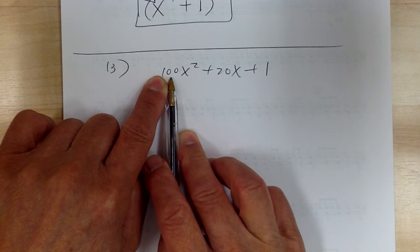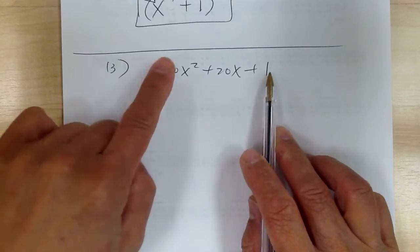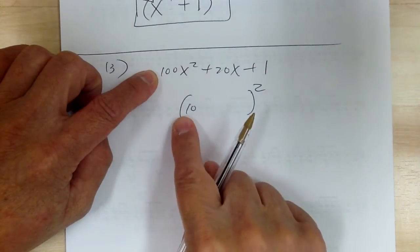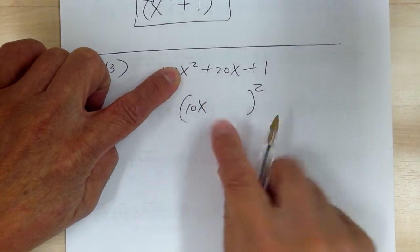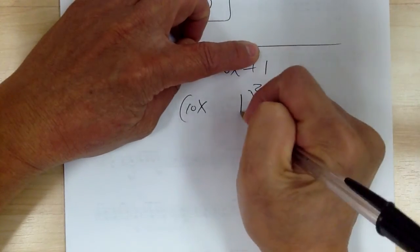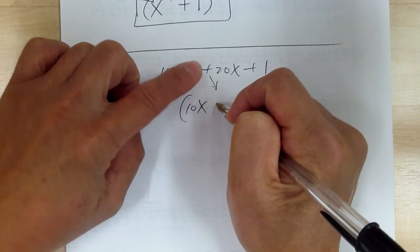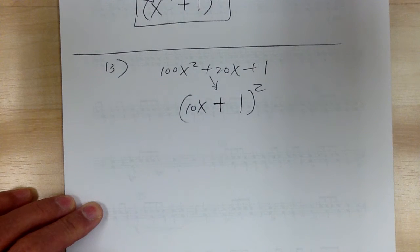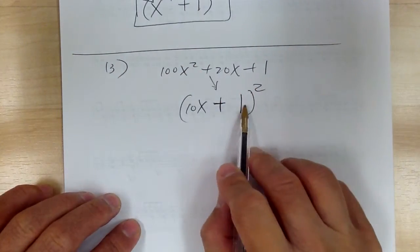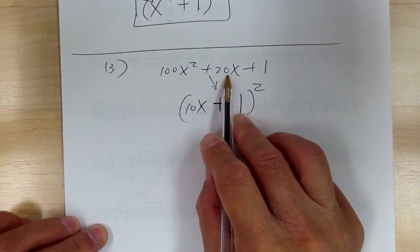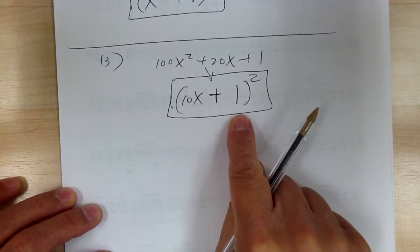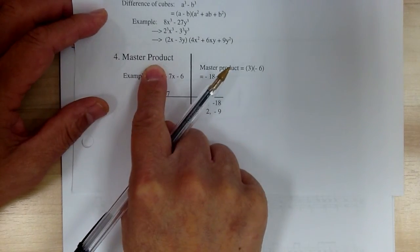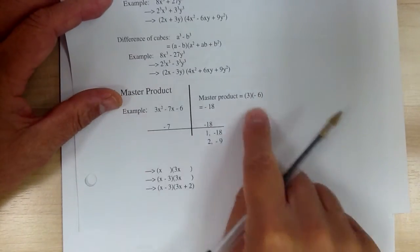100 is 10 squared — good. And the last term is 1 squared — good. If the front and back are perfect squares, you guess. To get 100 you need 10, to get x squared you need x, to get 1 you need 1. The sign of the middle term tells you the sign in the binomial — it's positive. Now check: 2 times 1 times 10x gives you 20x — it matches. That's your answer. If it doesn't match, you'd move to step 4, which you'll learn later.